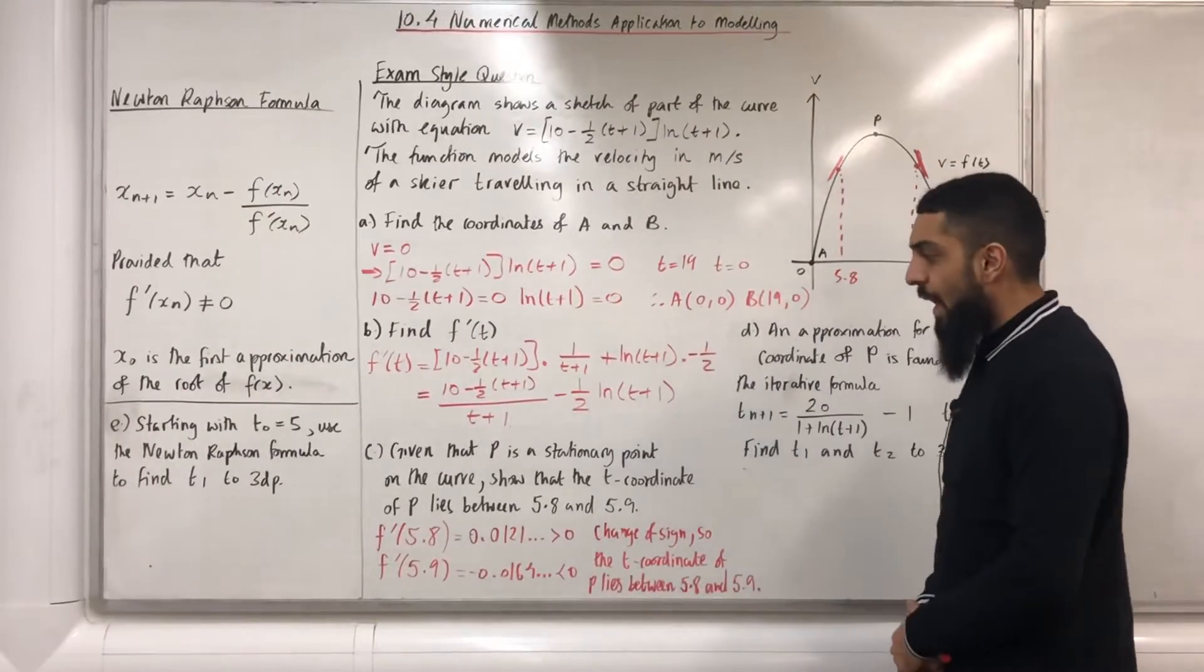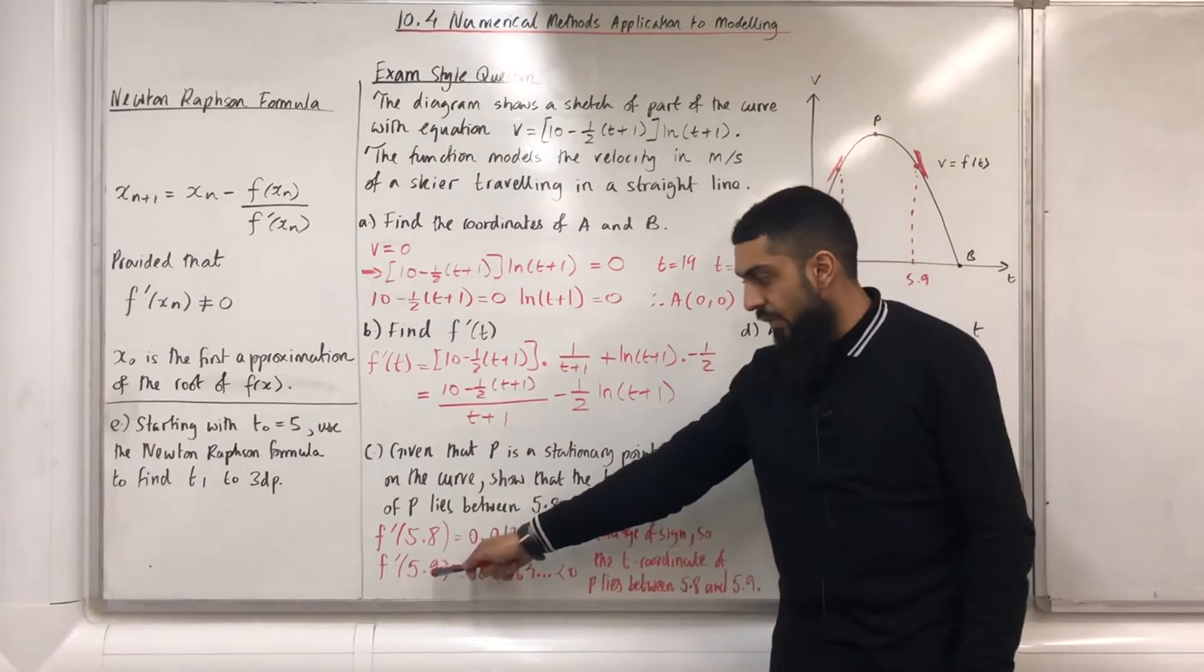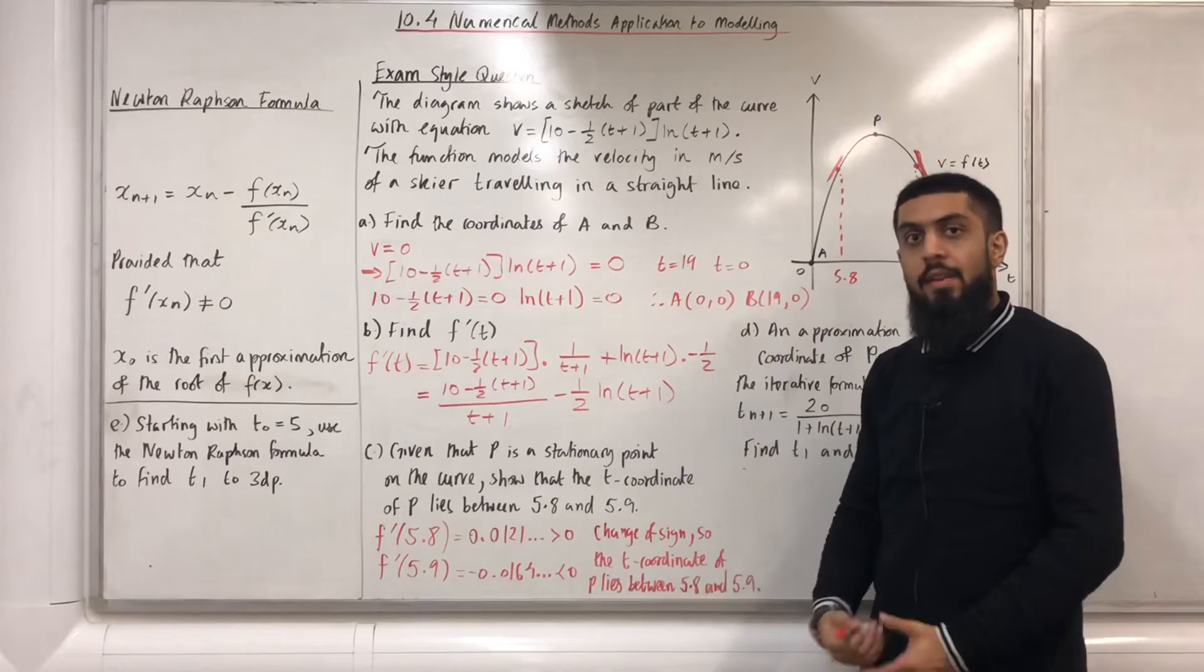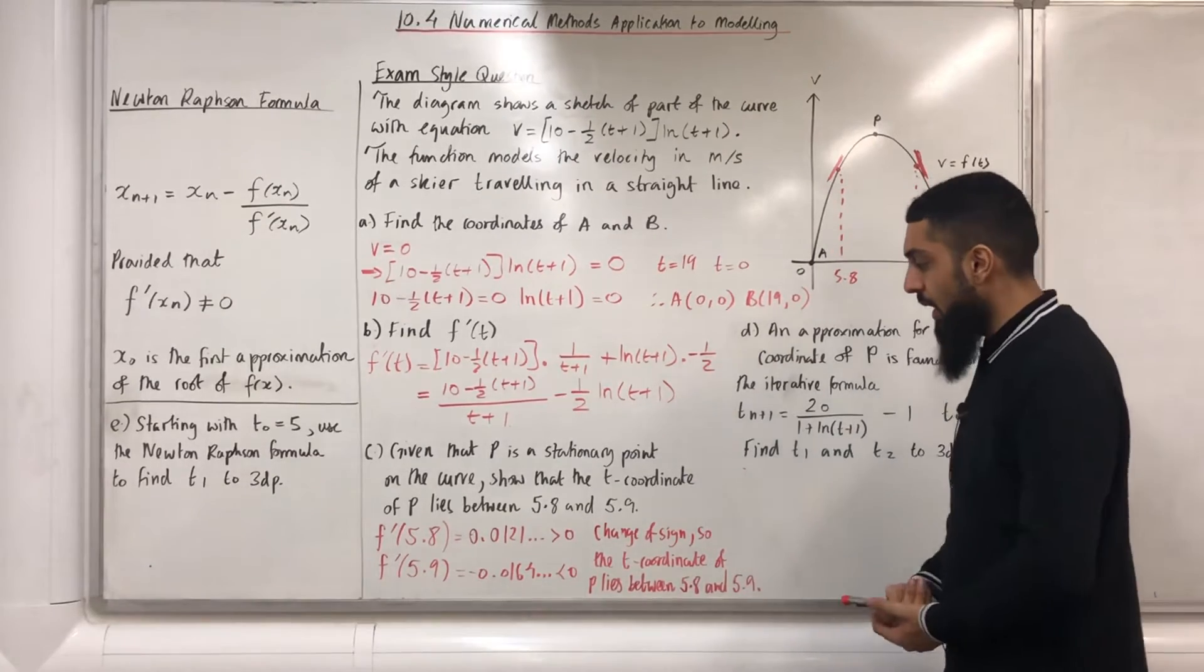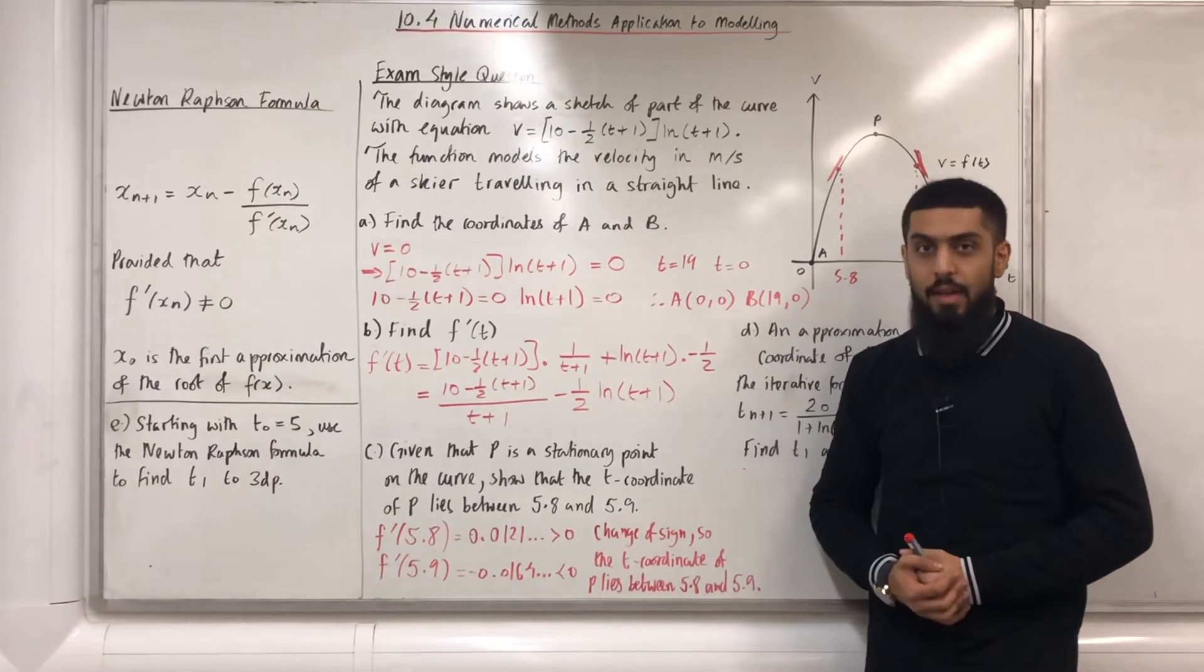After using my calculator, I get f'(5.8) > 0 and f'(5.9) < 0. Therefore, I can now write my conclusion. Change of sign so the t coordinate of P lies between 5.8 and 5.9. Moving on to part D.